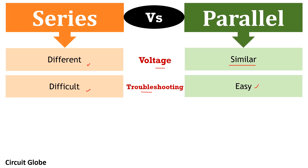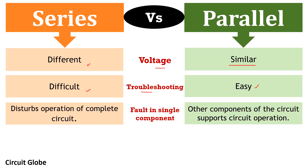The next parameter is the effect of a fault in a single component. Whenever a fault occurs in any of the serially connected elements, it causes a disturbance in the complete circuit operation, because the entire circuit operates through a single path. However, in a parallel circuit, if one component malfunctions, the other parts of the circuit remain properly active and continue to perform their work, supporting overall circuit operation.